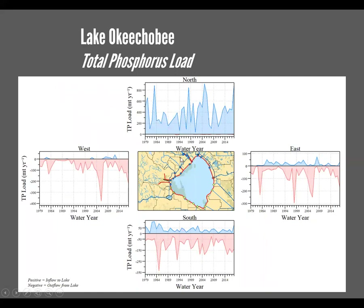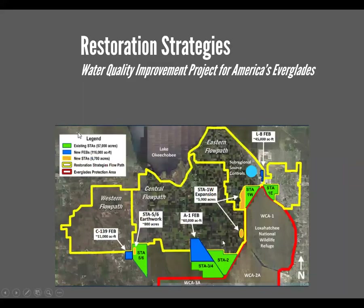Along with that water comes phosphorus flow. These figures are set up just like the last ones — blue is positive coming in, red is negative going out, for north, south, east, and west. Note again the scales are all different. The majority of the load comes from the north. Historically, there has been some back-pumping from the south — water going from the agricultural area back into the lake. But most of the phosphorus exits either east, west, or south.